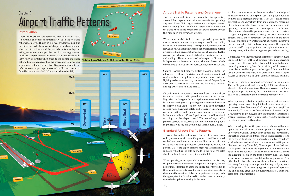A pilot is not expected to have extensive knowledge of all traffic patterns at all airports, but if the pilot is familiar with the basic rectangular pattern, it is easy to make proper approaches and departures from most airports, regardless of whether or not they have control towers. Mid-air collisions usually occur on clear days with unlimited visibility. Never assume you have found all of the air traffic and stop scanning. The traffic pattern altitude is usually 1,000 feet above the elevation of the airport surface.